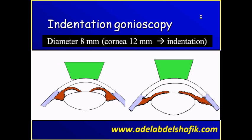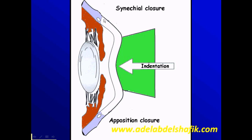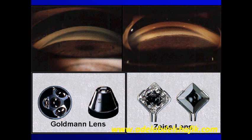The Puzner lens has an important role in indentation gonioscopy. If you put this lens and start to push it in a little bit, the cornea will be indented and aqueous will push everything behind, so the iris will be pushed back. This is important to differentiate between a narrow angle caused by actual synechiae and a narrow angle caused by apposition with no synechiae between the iris and the lens. An angle that looks closed with the three-mirror may open with the Puzner and indentation — confirming it is apposition, not actual synechiae.